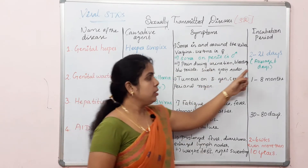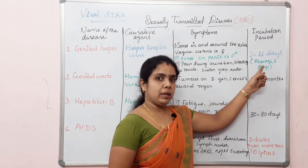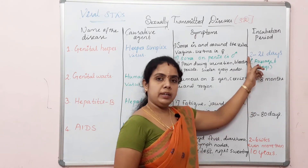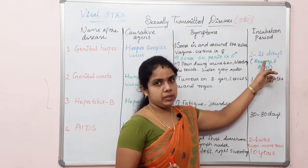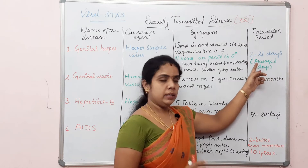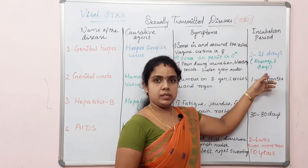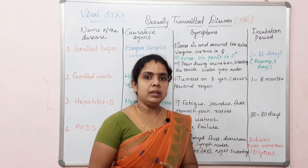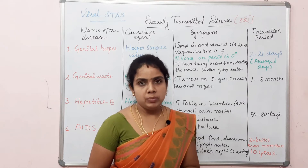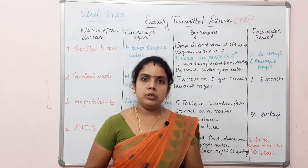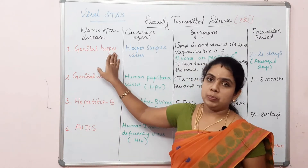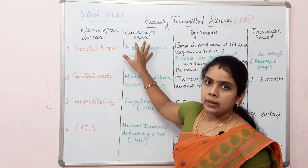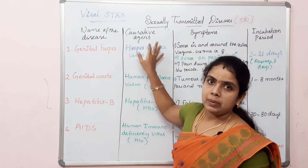Genital herpes major symptoms include pain during urination, bleeding between periods, and swollen groin nodes. The incubation period is 2 to 21 days, with an average of 6 days. Causative agent is Herpes Simplex Virus.